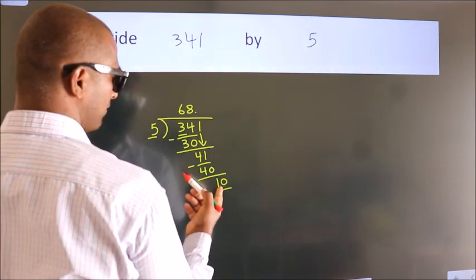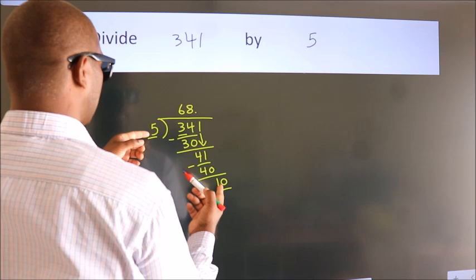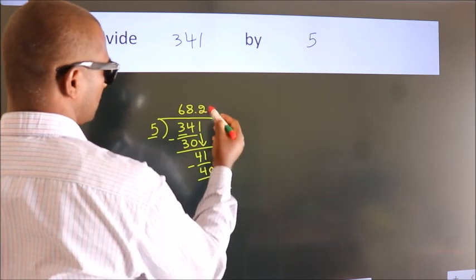So, 10. When do we get 10? In the 5 table, 5 times 2 is 10.